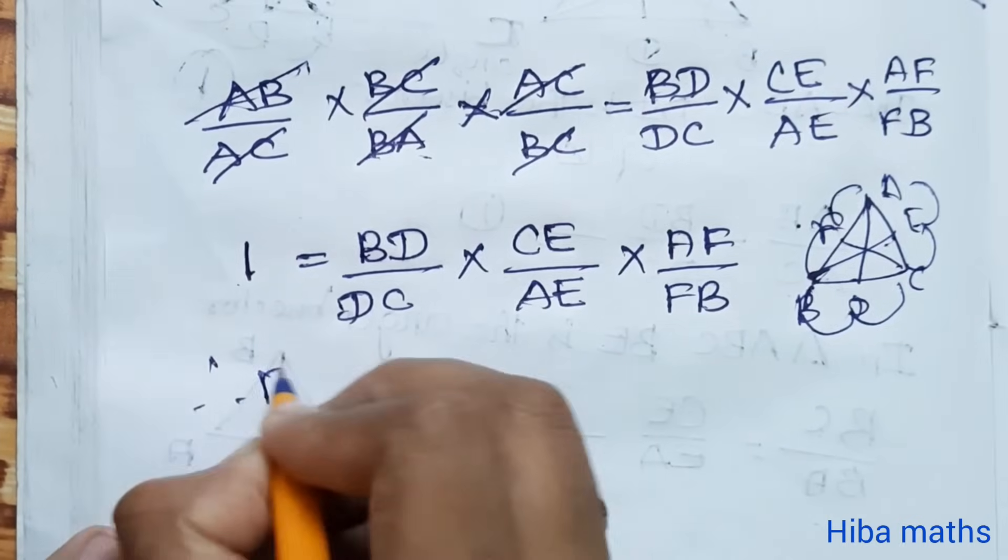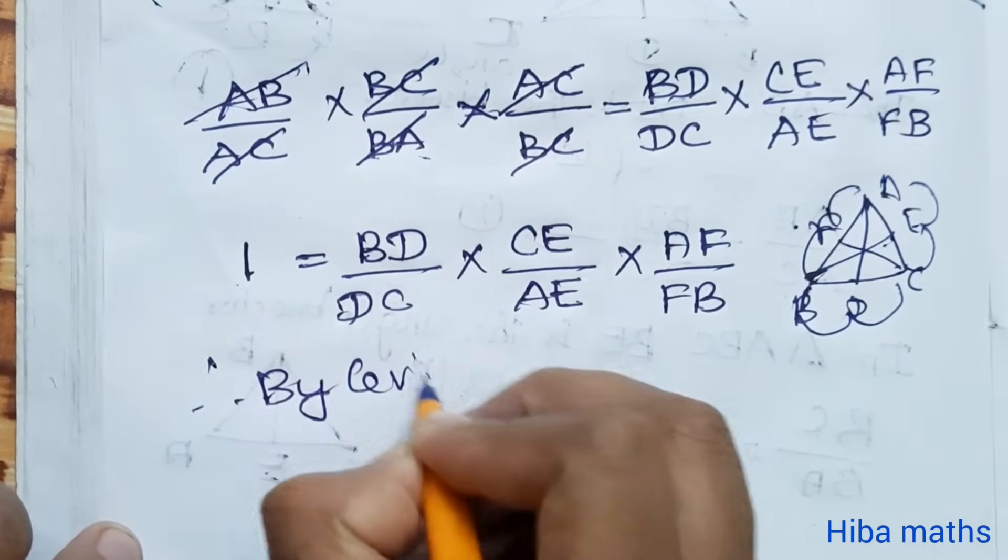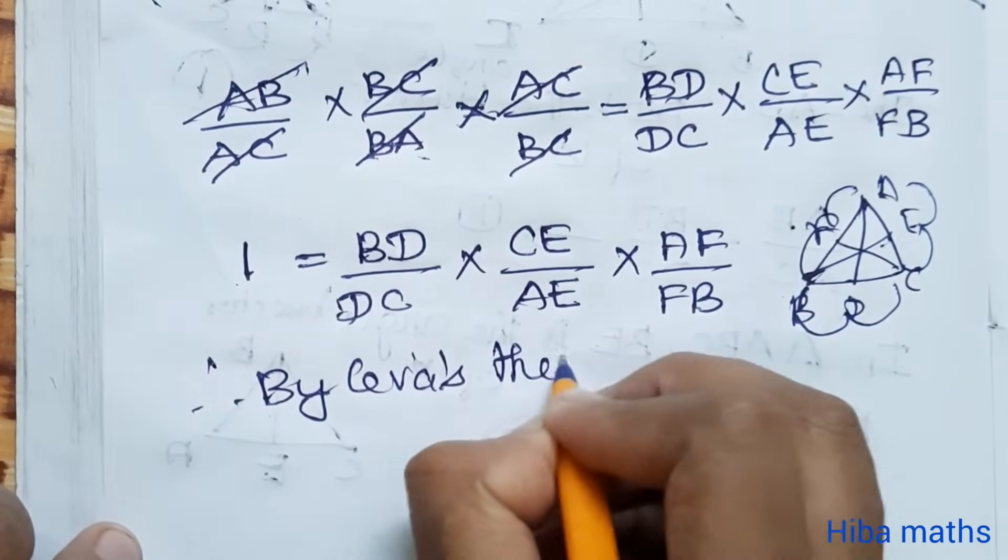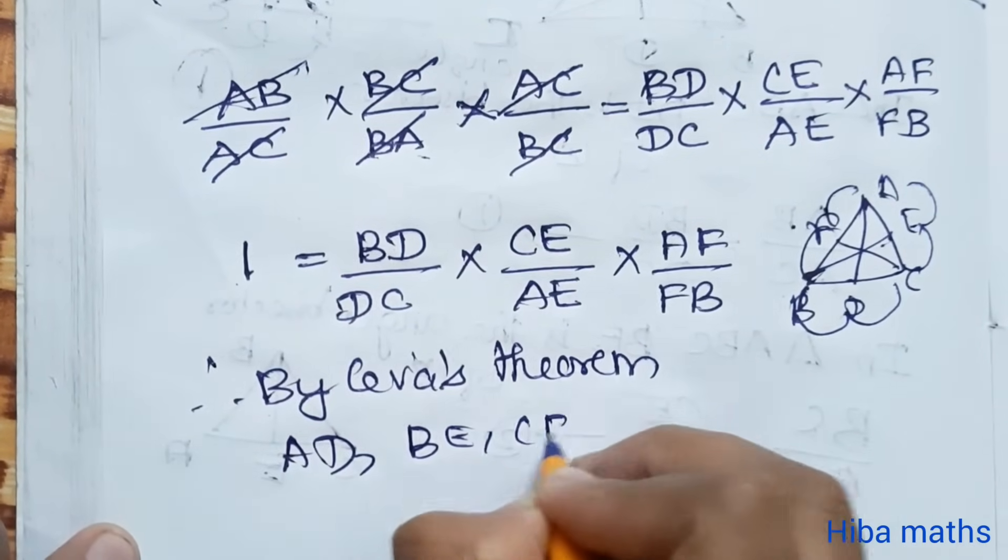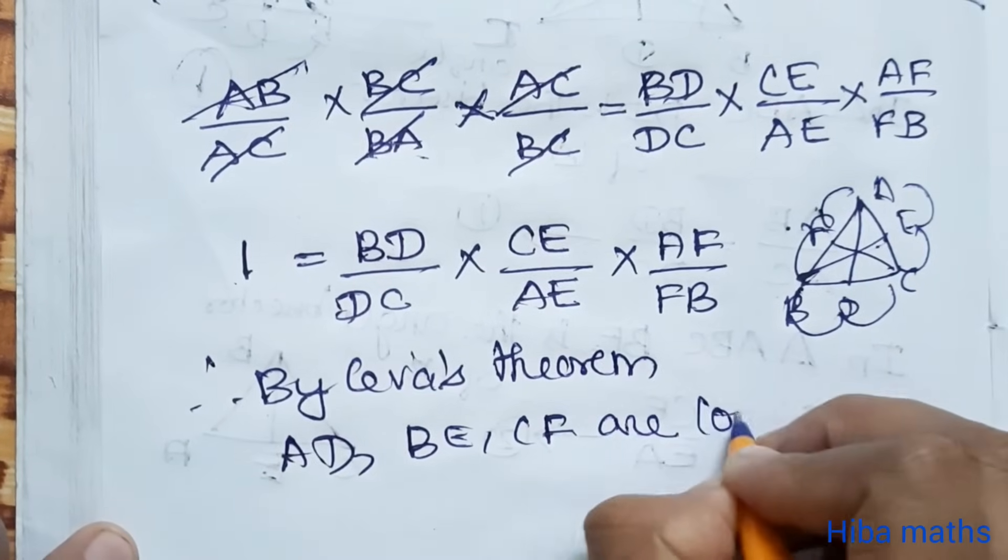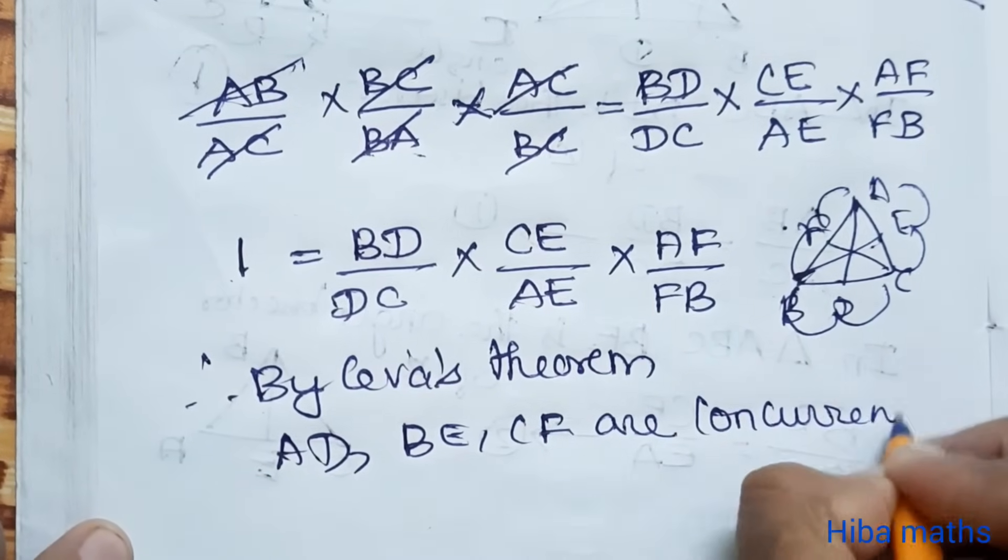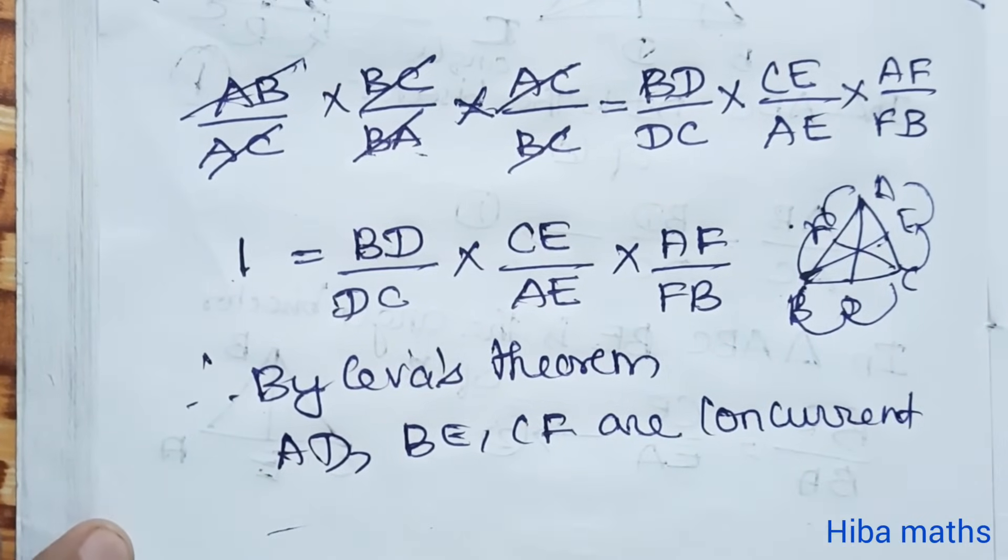Therefore, by Ceva's theorem, AD, BE and CF are concurrent. Thank you so much for watching. Take care.